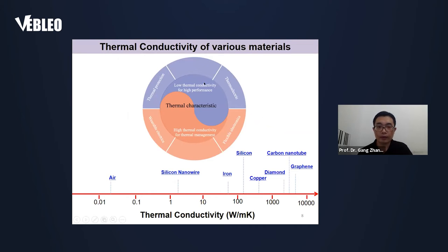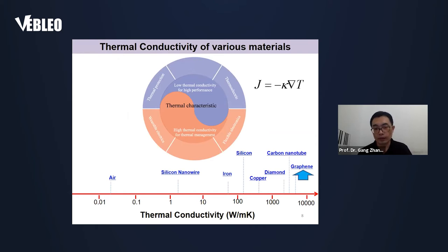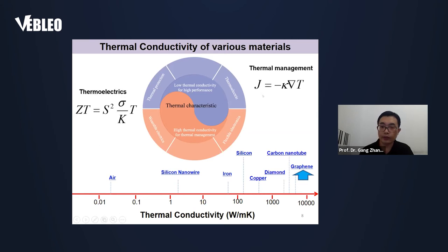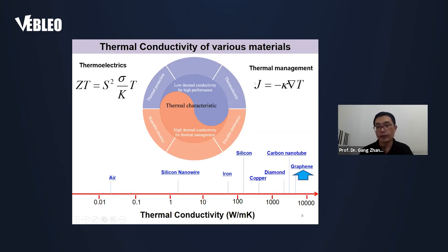As a summary, here I show the thermal conductivity spectrum. If the material has a low thermal conductivity, we can use it for thermoelectric energy production. And if the material has high thermal conductivity, we can use it for thermal management — for example, in 3D IC and thermal electronics. For the same temperature difference, with high thermal conductivity the heat current is also high, so we can use high thermal conductivity materials for thermal management. And for low thermal conductivity materials, we use them for thermoelectrics, because low thermal conductivity results in high ZT and high efficiency.